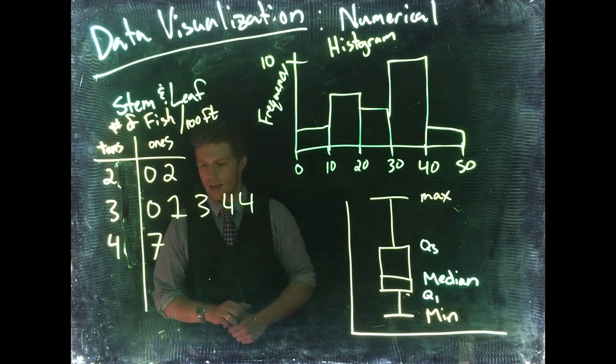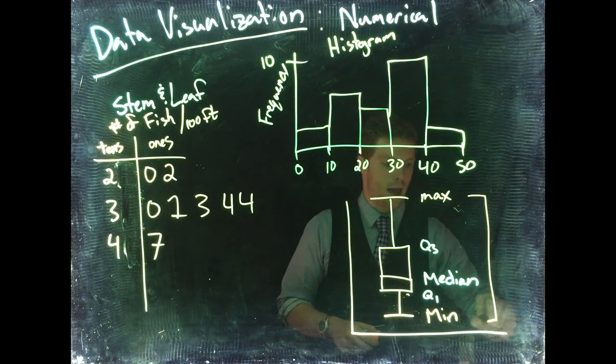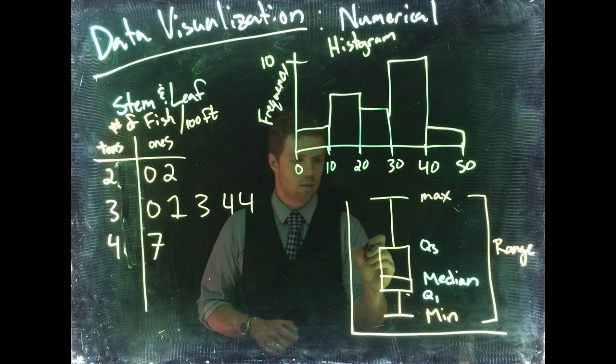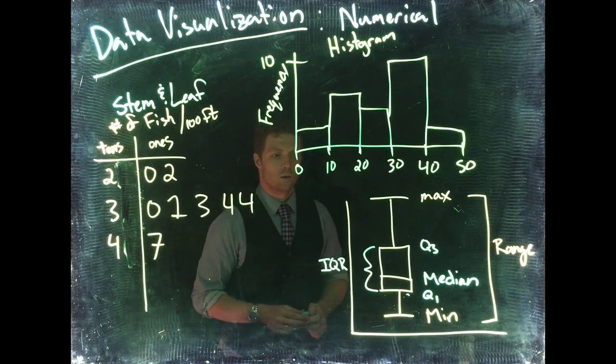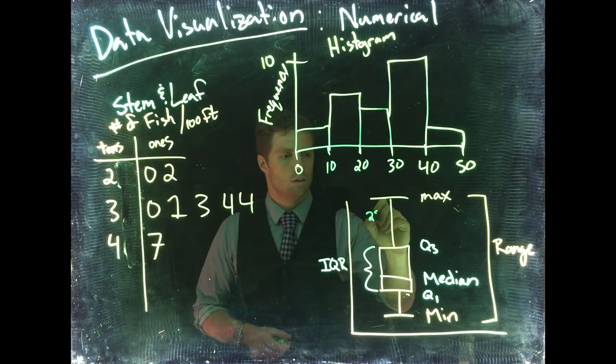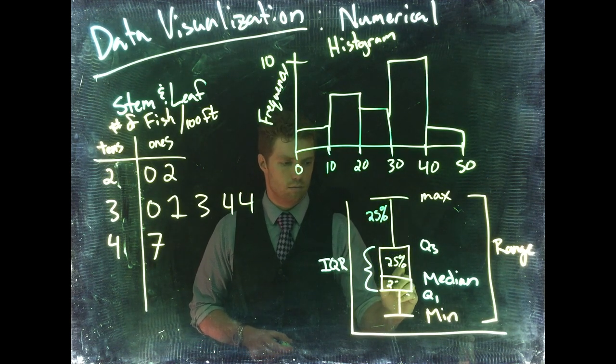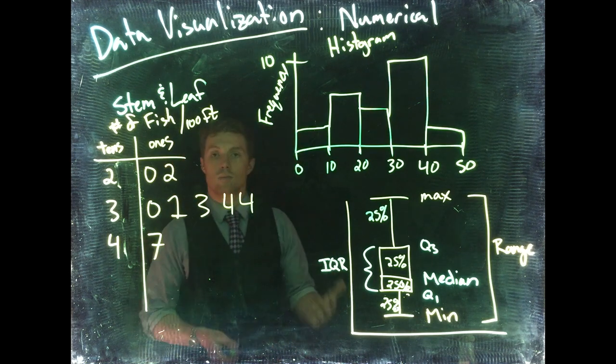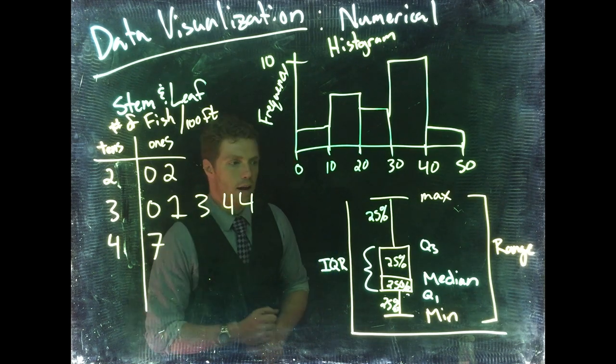And we can also talk about our range, so max minus min, that is the range. And then we can also talk about the IQR, or interquartile range. What's interesting about each of these chunks is each of those chunks represent 25% of the data. So the interquartile range lets us know where the middle 50% of the data is lying. It kind of lets us know what is happening in the middle of our data.